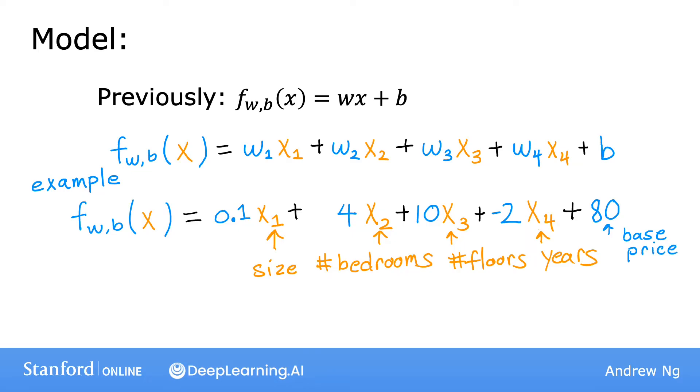Let's think a bit about how you might interpret these parameters. If the model is trying to predict the price of the house in thousands of dollars, you can think of this b equals 80 as saying that the base price of a house starts off at maybe $80,000 assuming it has no size, no bedrooms, no floor, and no age. And you can think of this 0.1 as saying that maybe for every additional square foot, the price will increase by $0.1,000 or by $100 because we're saying that for each square foot, the price increases by 0.1 times $1,000, which is $100. And maybe for each additional bathroom, the price increases by $4,000. And for each additional floor, the price may increase by $10,000. And for each additional year of the house's age, the price may decrease by $2,000 because the parameter is negative 2.